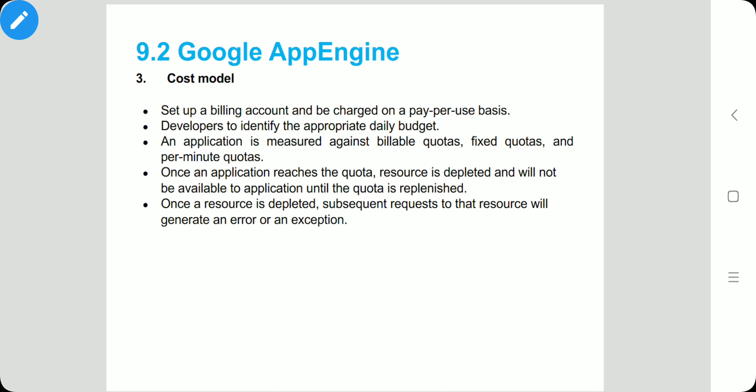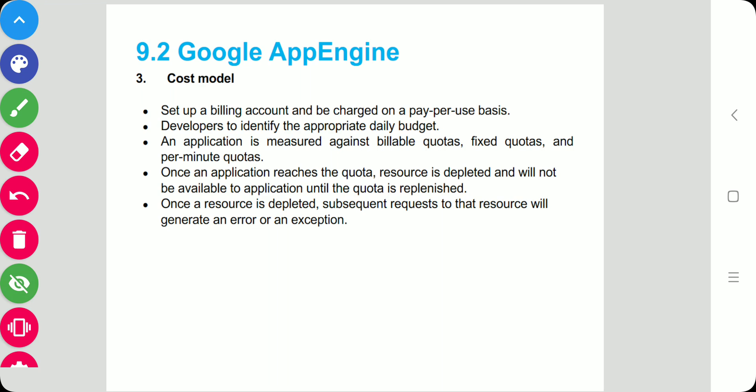An application is measured against three quotas: billable quotas, fixed quotas, and per-minute quotas. Google App Engine uses these quotas to ensure that the user does not spend more than the allocated budget and that applications run without being influenced by each other. App Engine will ensure that the application does not exceed these quotas.